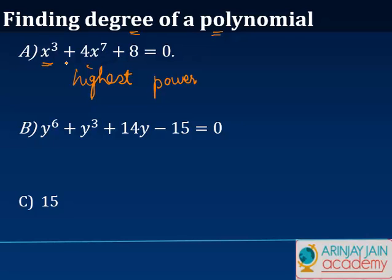In this particular case, the variable is x. We have x³ + 4x⁷ + 8 = 0. In this case, the variable is x. What is the highest power of x?